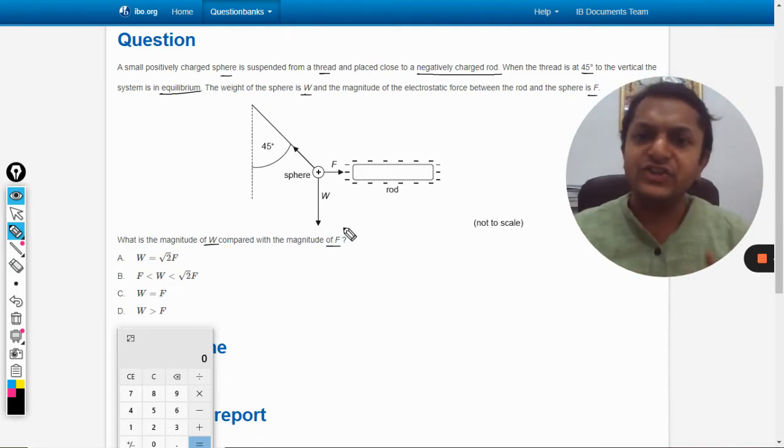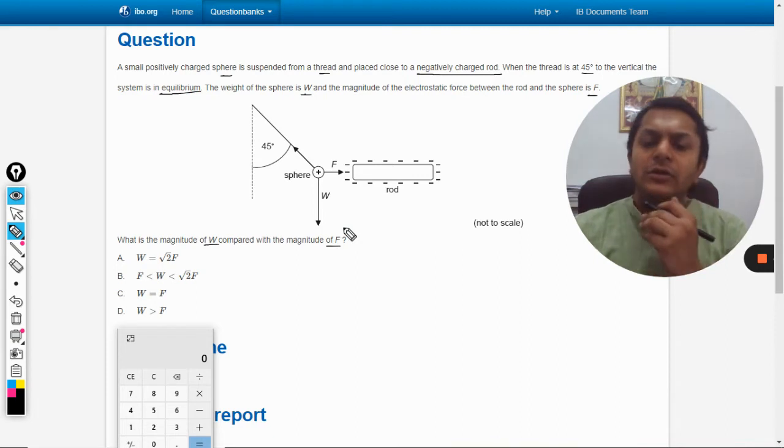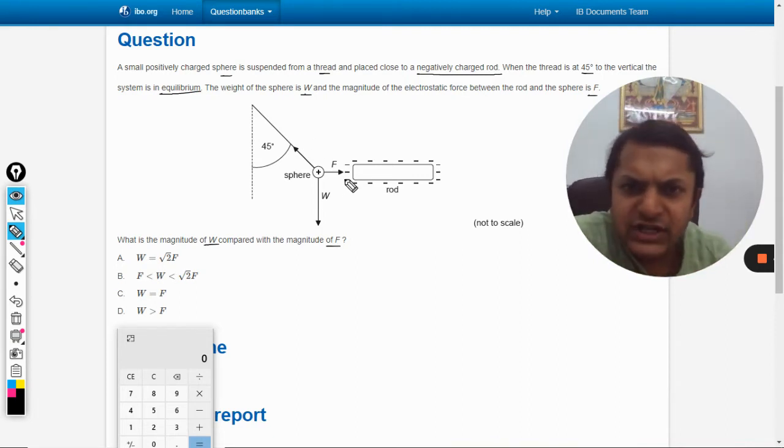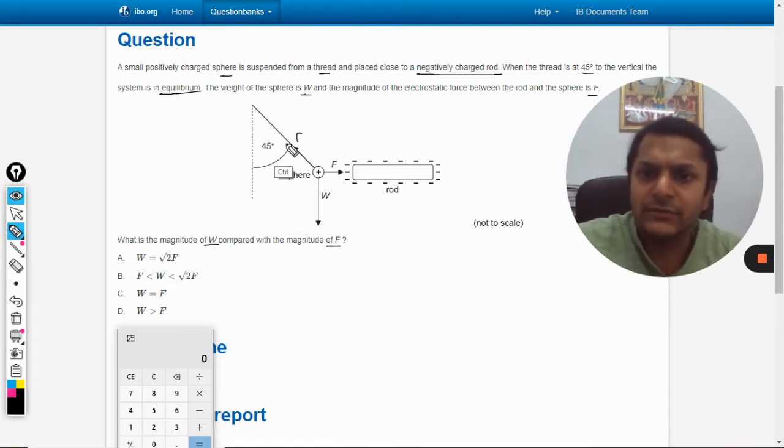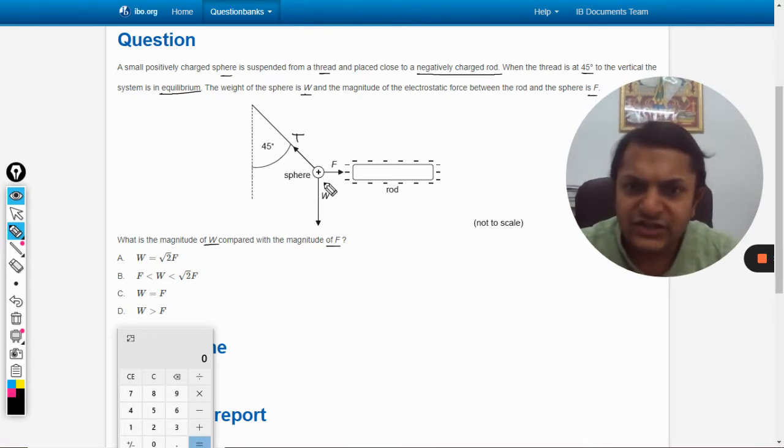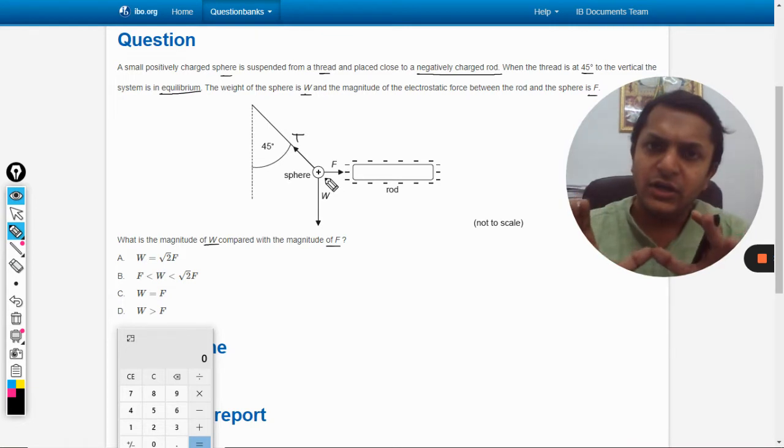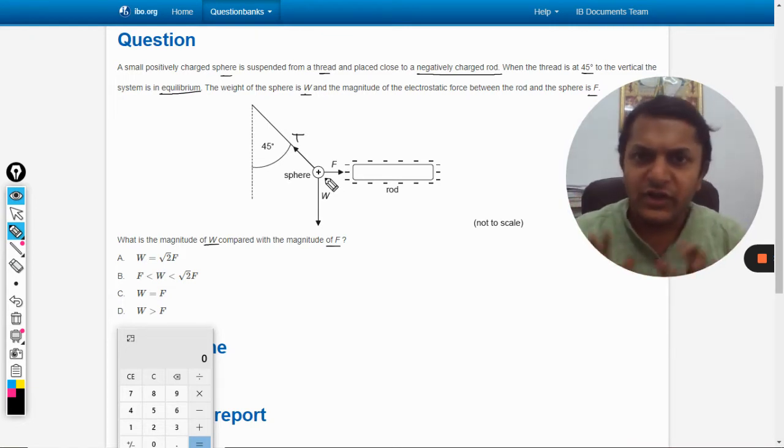How many forces are there? First is the electrostatic force, another is the weight, and this is the tension force T. This is the electric force F. In this kind of question, what we do is